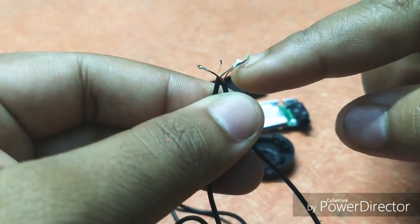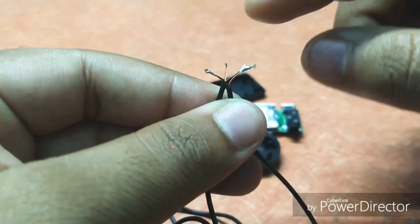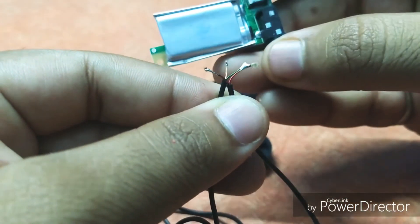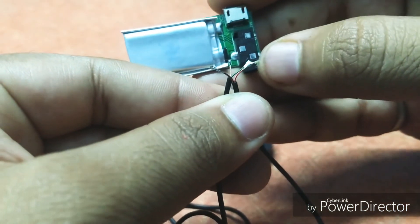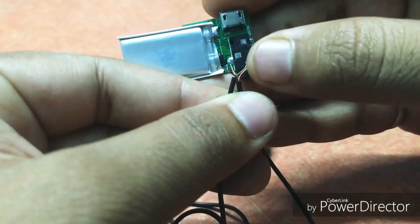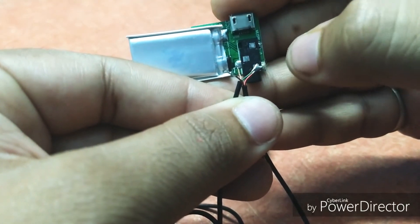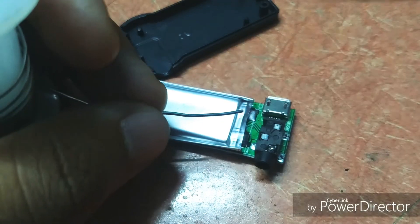I soldered the two wires together and this will become my common point. The rest of the two wires will go to this terminal and this terminal. Now it's time to solder the wires carefully.